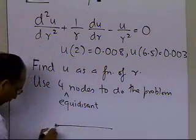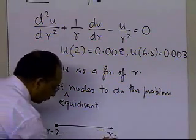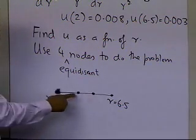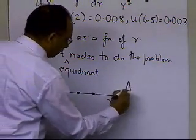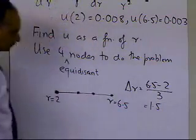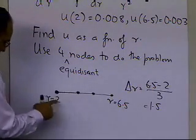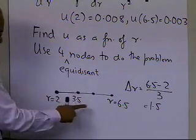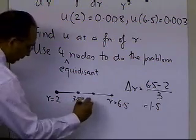So if we're at r = 2 and r = 6.5, breaking it into 4 nodes means we have 3 segments. The segment width delta r is (6.5 − 2) / 3 = 1.5. The second node will be at 2 + 1.5 = 3.5, and the next node at 3.5 + 1.5 = 5.0.